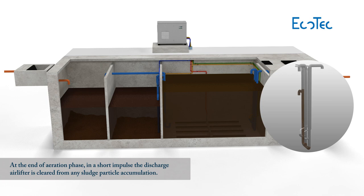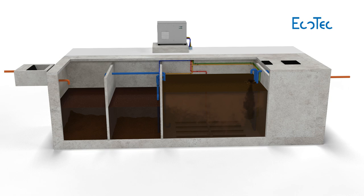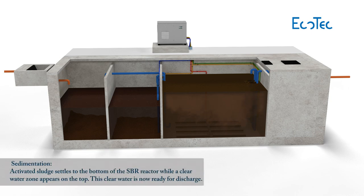In a short cleaning pulse, the discharge airlift is cleared from any sludge particles. During the sedimentation phase, activated sludge settles to the bottom, and a clear water zone is formed on the upper layer.